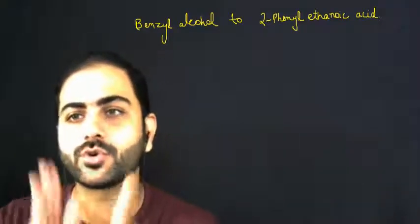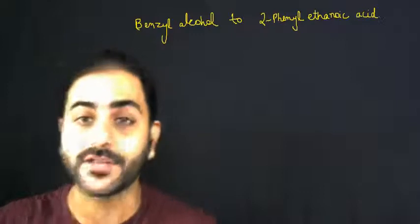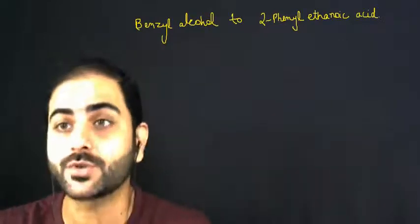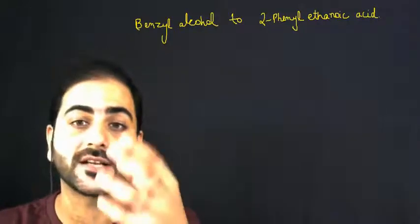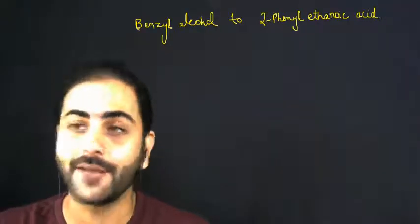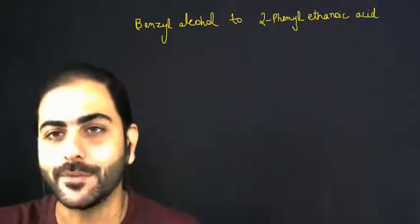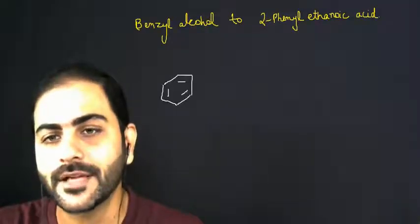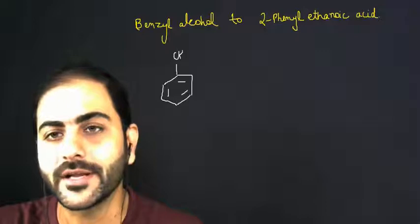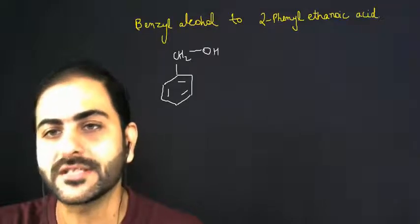Benzyl alcohol to 2-phenyl ethanoic acid. First of all, most of the students will not be able to write down the 2-phenyl ethanoic acid structure. Benzyl alcohol is very famous. Benzene is made with CH2 and OH. This is benzyl alcohol.